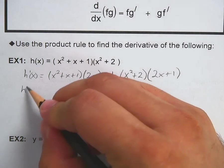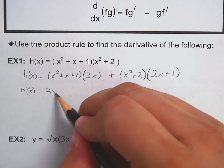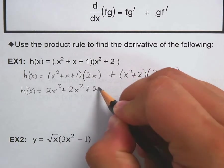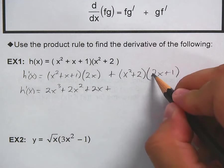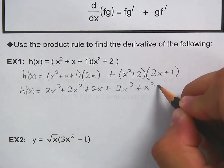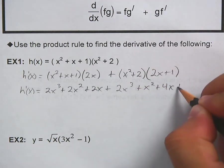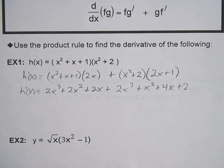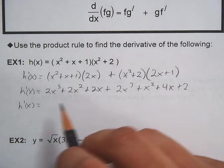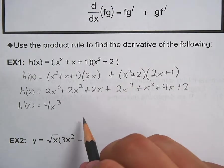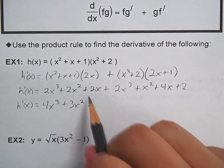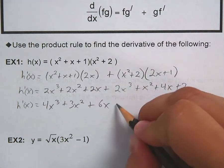Let's simplify. Expanding the first product gives 2x³ + 2x² + 2x. Expanding the second product gives 2x³ + x² + 4x + 2. Combining like terms: 2x³ + 2x³ = 4x³; 2x² + x² = 3x²; 2x + 4x = 6x; plus 2. So h′(x) = 4x³ + 3x² + 6x + 2.